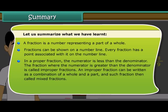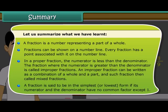The fraction where the numerator is greater than the denominator is called improper fractions. An improper fraction can be written as a combination of a whole and a part, and such fraction is then called mixed fractions. A fraction is said to be in the simplest or lowest form if its numerator and the denominator have no common factor except one.